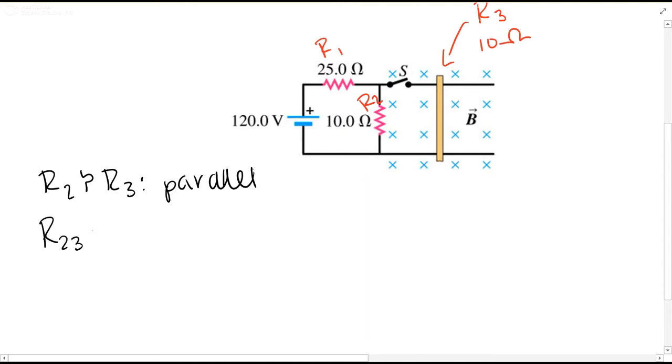So R23 equals R2 times R3 over R2 plus R3, which equals 100 over 20, so 5 ohms, because they're both 10-ohm resistors.